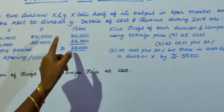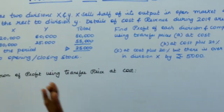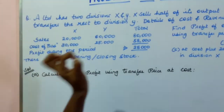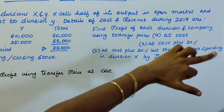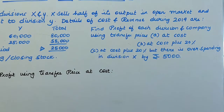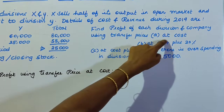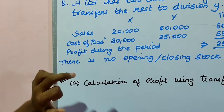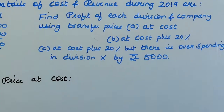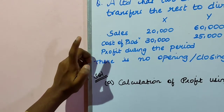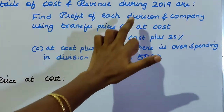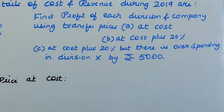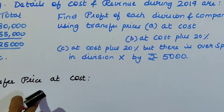Remember: X is selling half in the open market and transferring the rest to division Y — that is an important point. Now let us find out the profit of each division and the company using transfer price at cost. Transfer price at cost means the transfer is done on the basis of cost of production. To find profit, you subtract total cost from total sales.